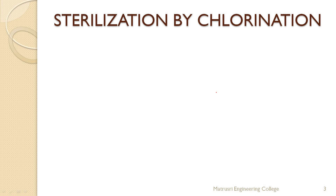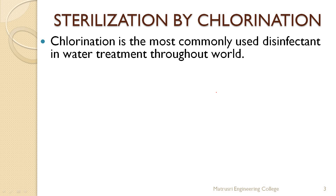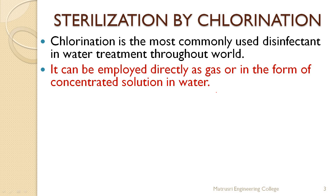Next, sterilization by chlorination. This sterilization is done in towns and villages throughout the world before supplying water for household purposes. Municipal water is first treated by sedimentation to remove impurities, then subjected to chlorination and supplied to households. Chlorination is very famous — it is an efficient disinfectant, very cheap, and easy to operate.